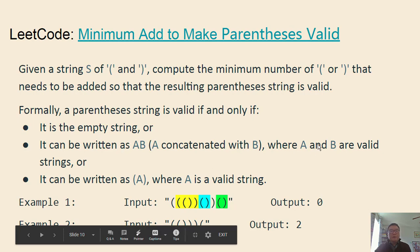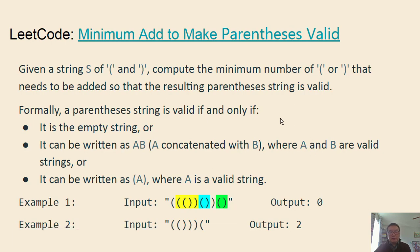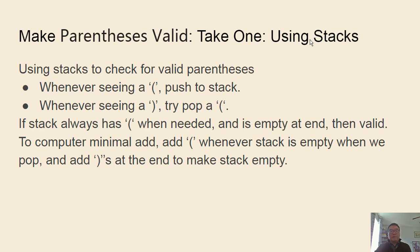For the second example, we need to add two. We have two open and three close parentheses, so we must add an open parenthesis somewhere, otherwise one of the close parentheses won't have a match. After doing that, we also need a closing parenthesis at the end, otherwise the last open one cannot be matched. So the answer is two.